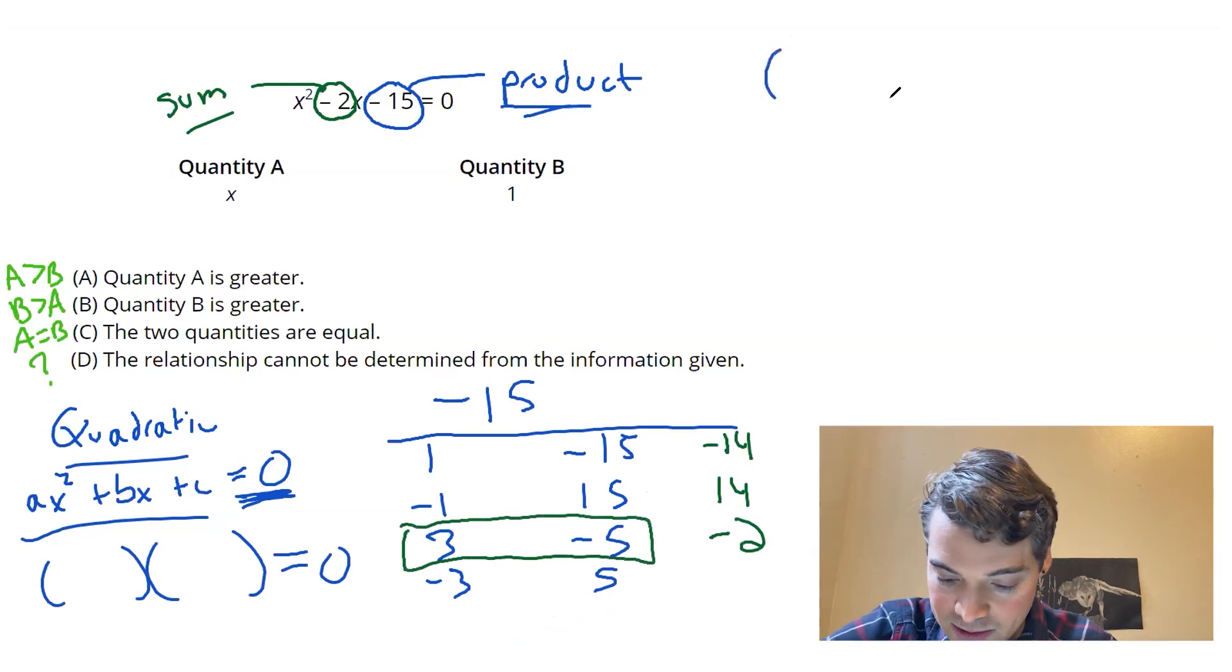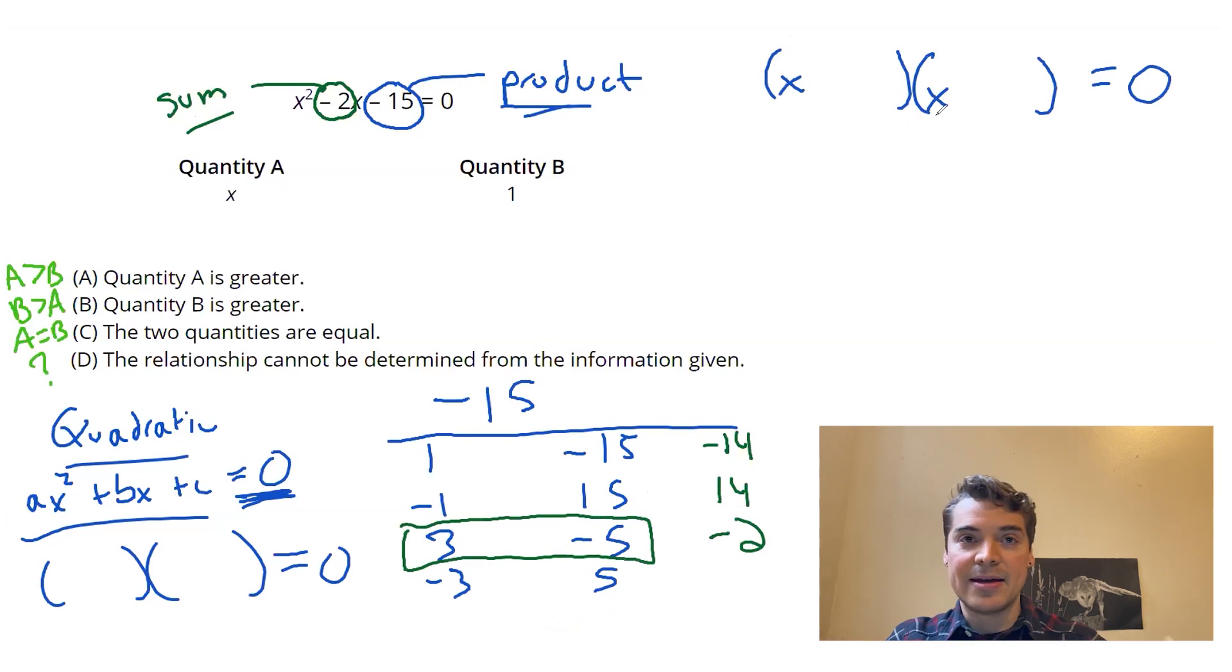So to rewrite this, I draw out my parentheses, it's equal to zero, I'm going to have an x there and an x there. Now I just insert those magic numbers. So x plus three, and x minus five.